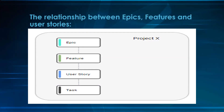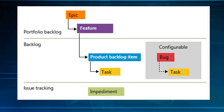The epic is the largest piece of work, broken down into a number of features. A feature is a smaller piece of work compared to the epic. If you break it further down, you get user stories. And when you break down user stories, you get tasks — also called sub-tasks depending on the platform you're using, whether Azure or Jira. The product backlog items are another way of referring to user stories.